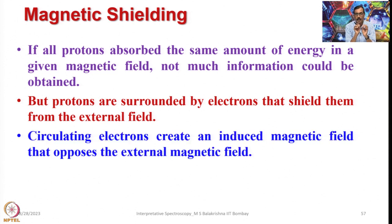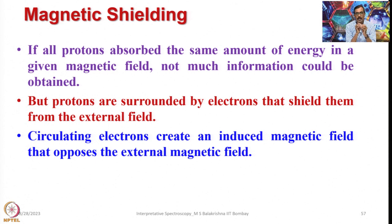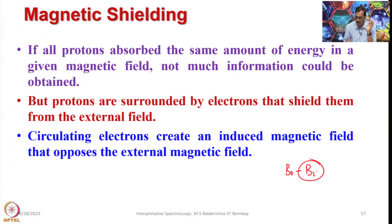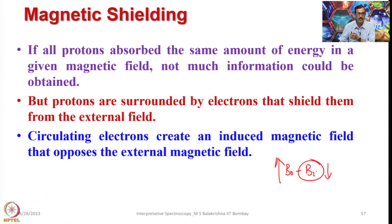Circulating electrons create an induced magnetic field that opposes the external magnetic field. As a result, the net magnetic field experienced by the nucleus will be B-naught minus the induced magnetic field B-i. That means the net magnetic field experienced by the nucleus is B-naught minus B-i. B-i is the induced magnetic field generated by circulating electrons, which always opposes the applied magnetic field. This is called magnetic shielding.